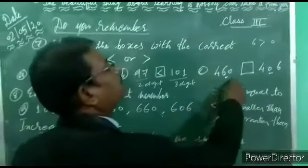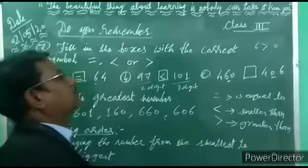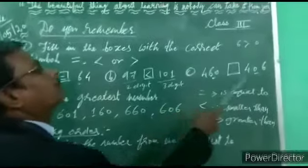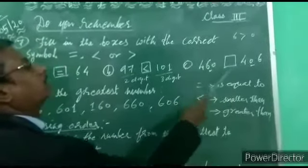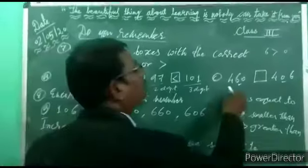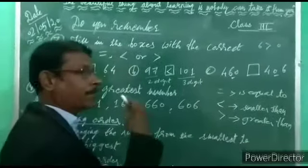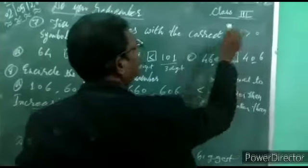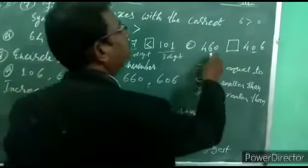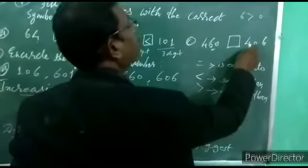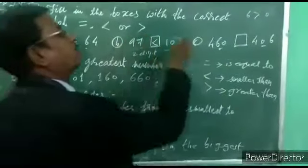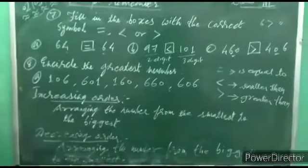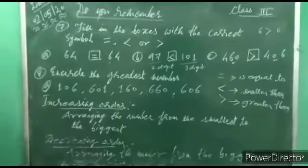Example C: 460 and 406. Now compare their place values. In the hundreds place, both have 4, so that is the same. Now compare the tens place: here 6, and here 0. 6 is greater than 0, so 460 is greater than 406. For the greater than sign, we put the greater than sign. According to the numbers, we put the correct sign.